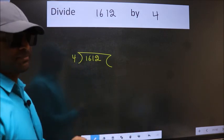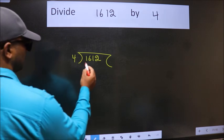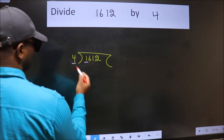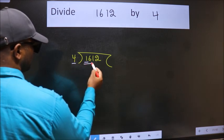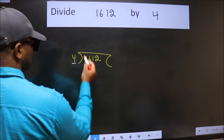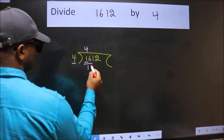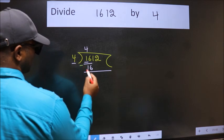This is your step one. Next, here we have 1. 1 is smaller than 4, so we should take two numbers: 16. When do we get 16 in the 4 table? Four fours are 16. Now we should subtract, we get zero.